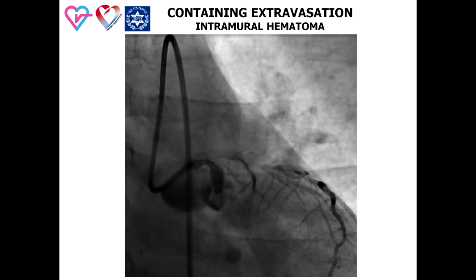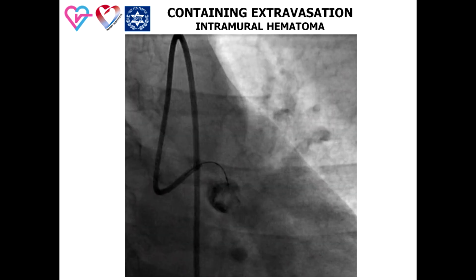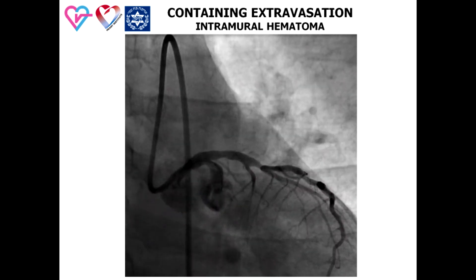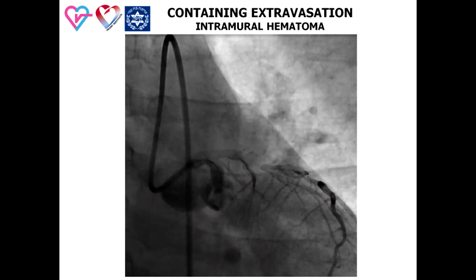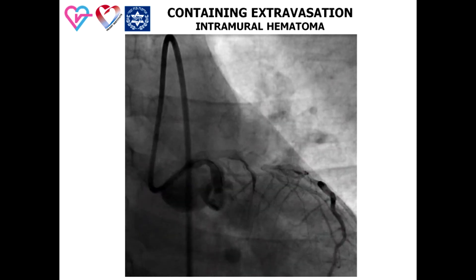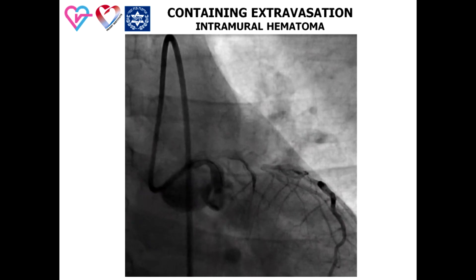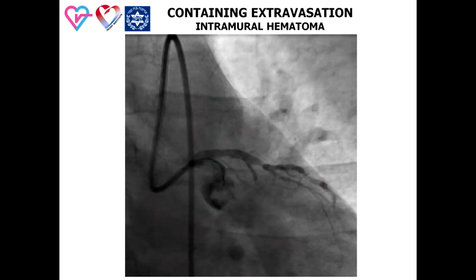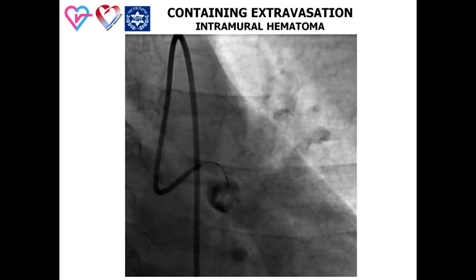In this angiogram, we can see contrast extravasation in a patient following an attempt to cross a chronic circumflex occlusion with a stiff guidewire. The patient remained completely asymptomatic with no angiographic evidence of hematoma extension. At this stage, the procedure was held back, and elective PCI to the CTO was done successfully two months later.